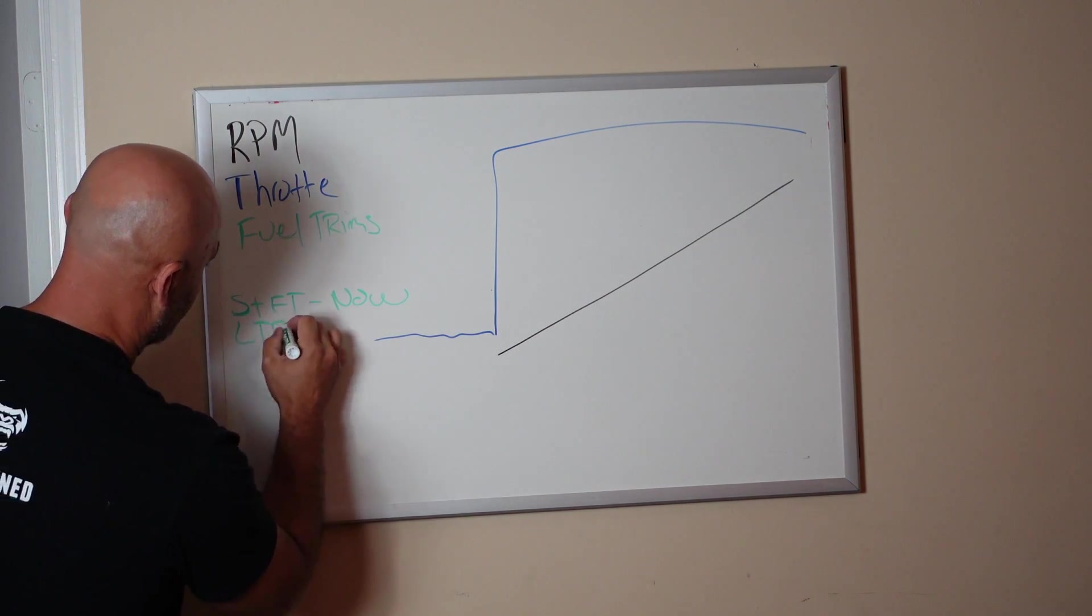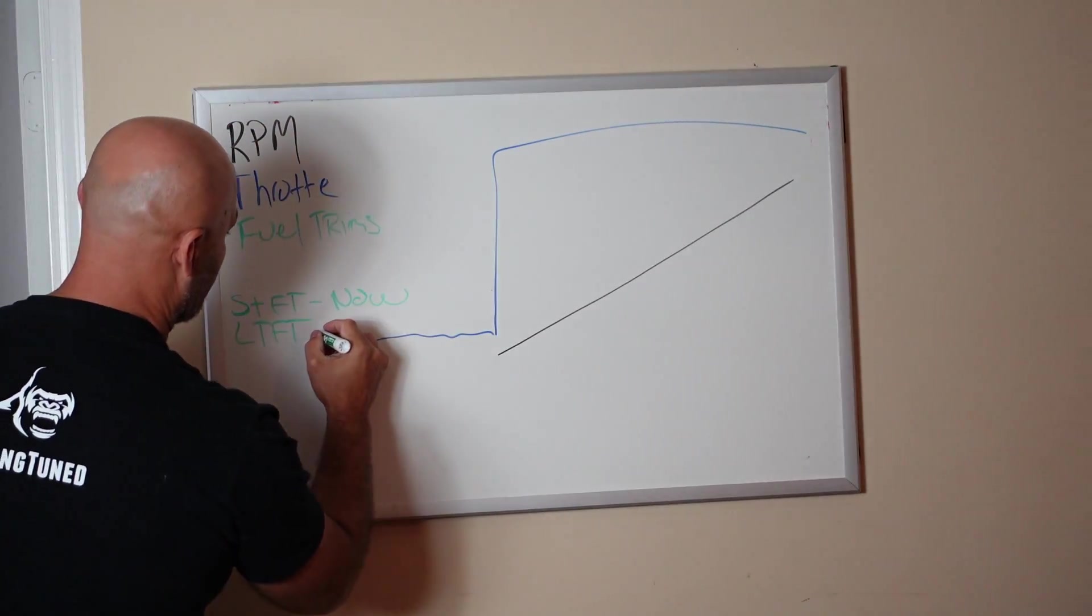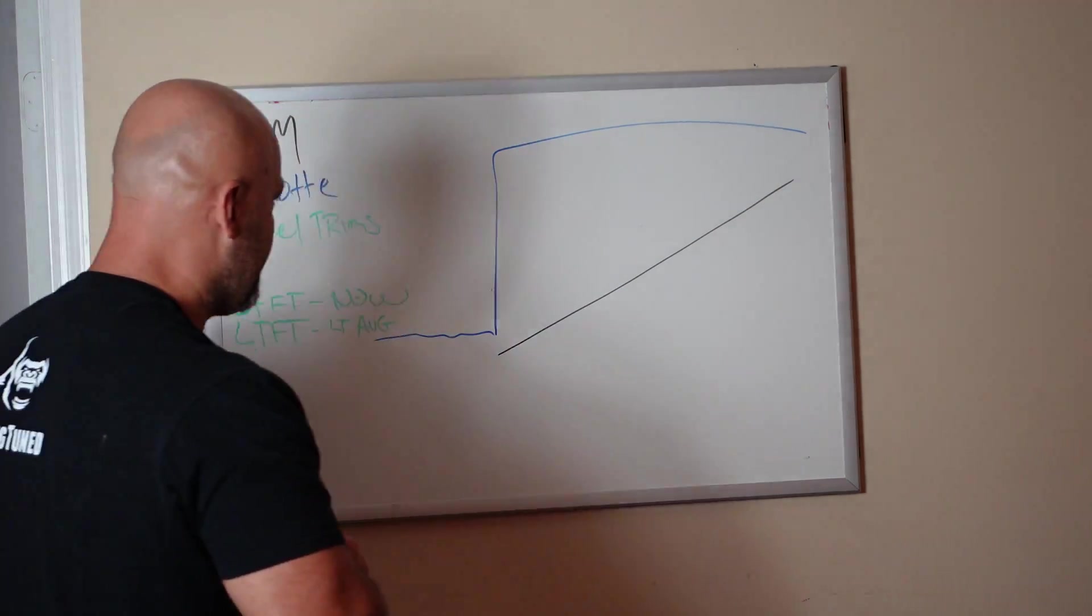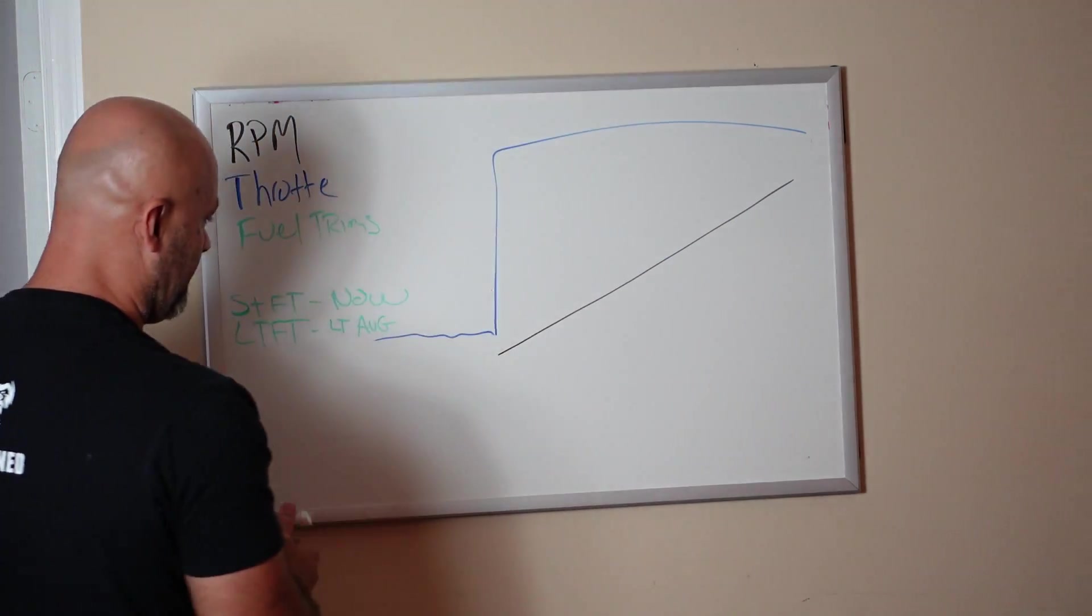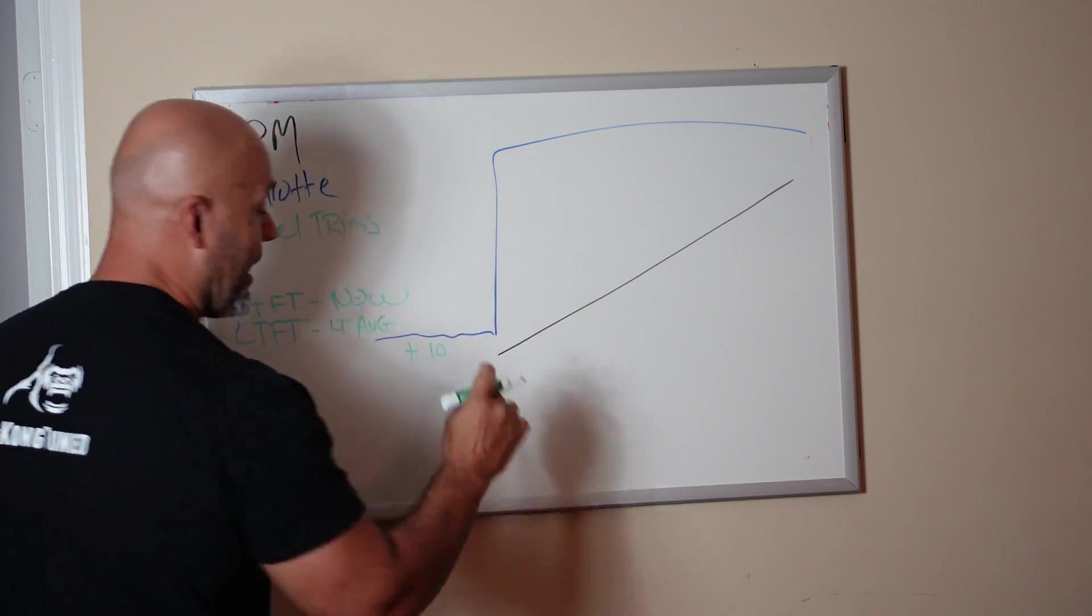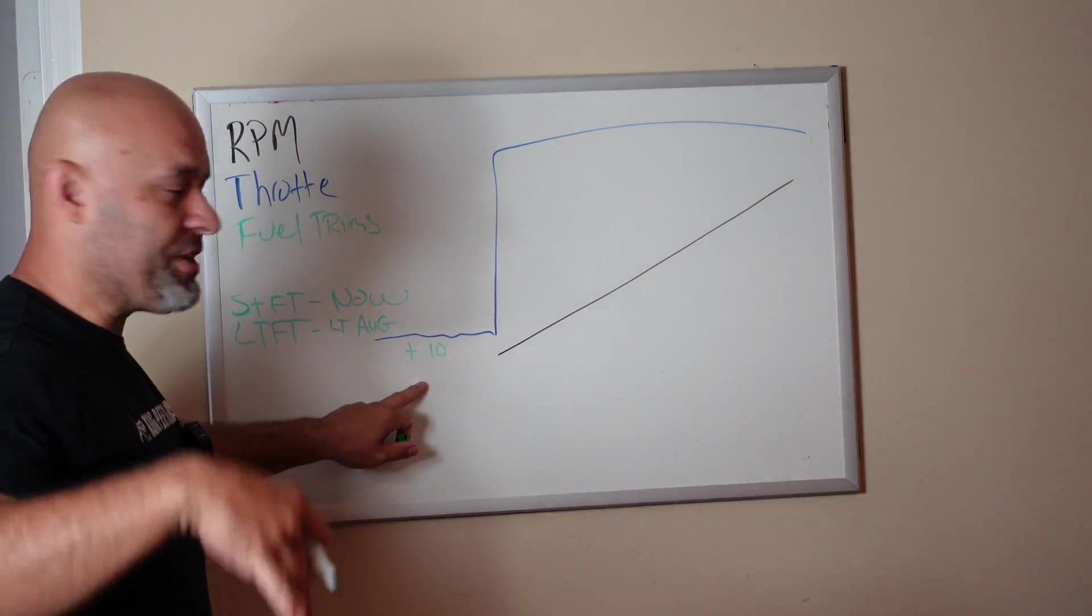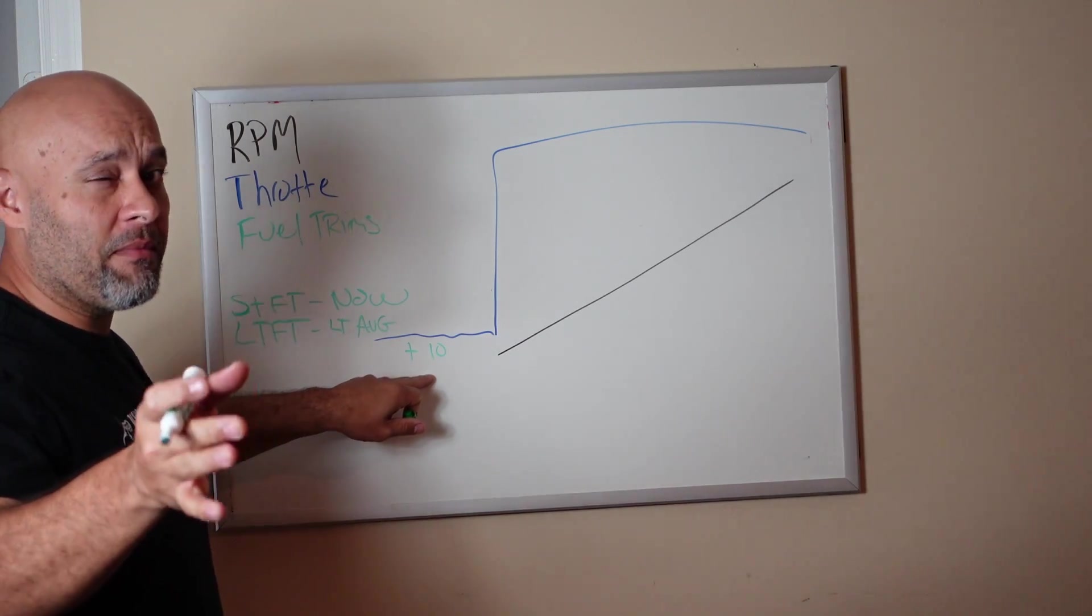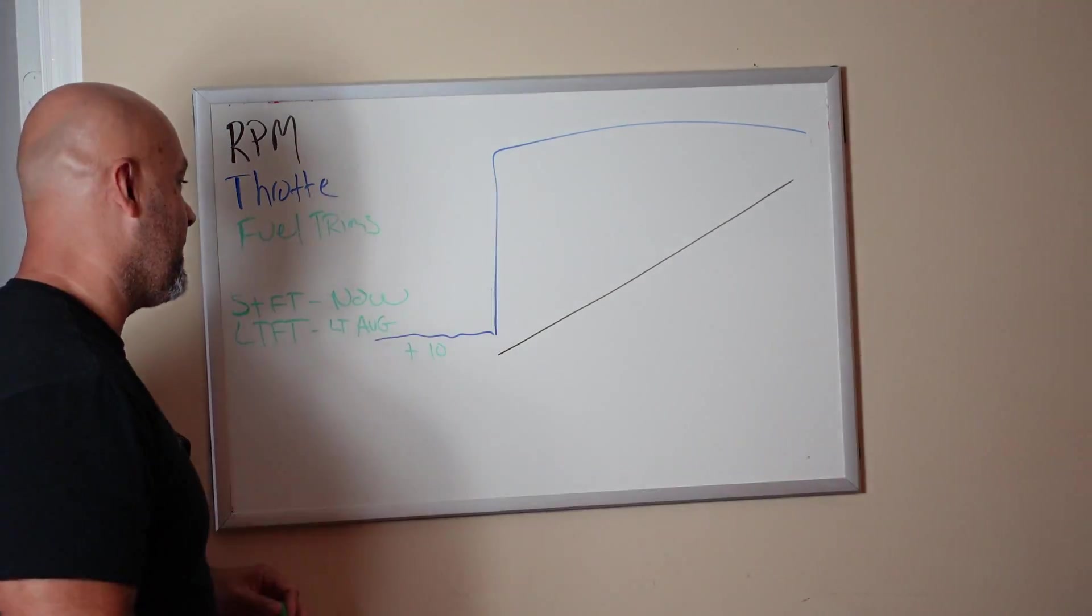Long-term fuel trim is an average of the life of the fuel trim. It's a long-term average. Let's say for instance you have fuel trims at idle, plus 10. On Coyotes, that's lean. Previous generations, plus 10 was rich. Let's stick to Coyote Gen 2 and up—Gen 1 and up, all Coyote.